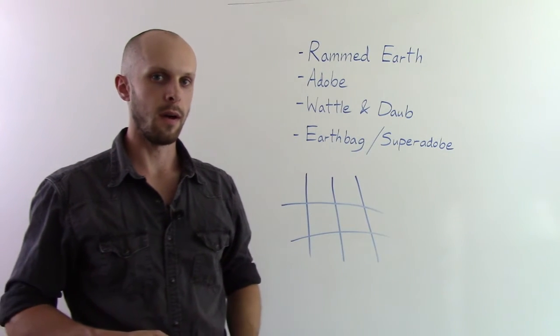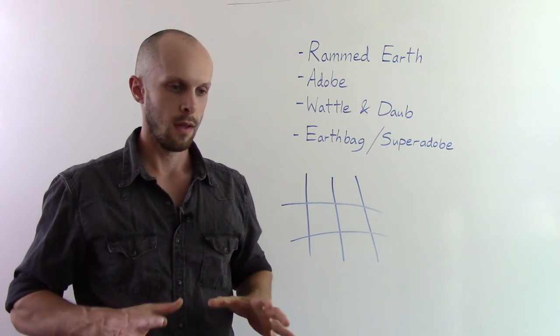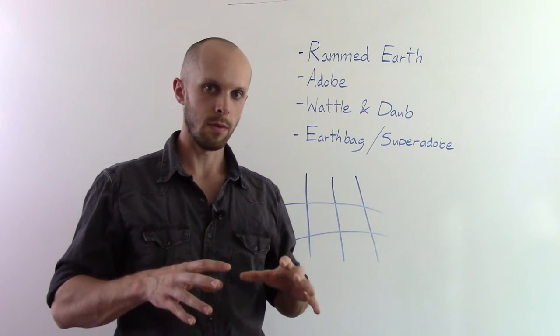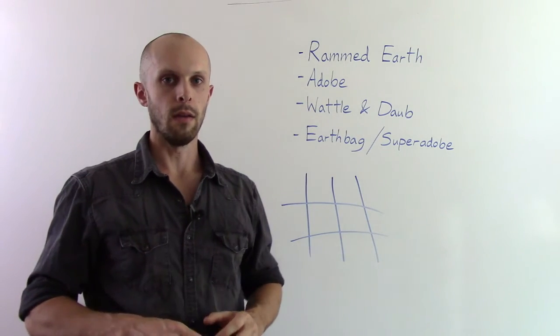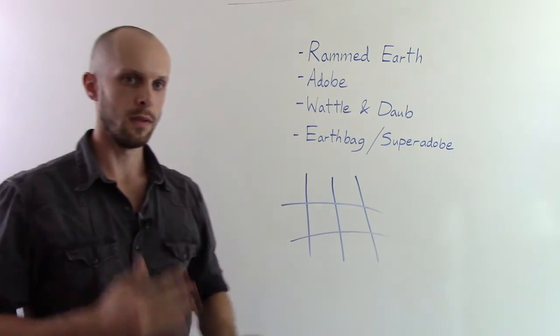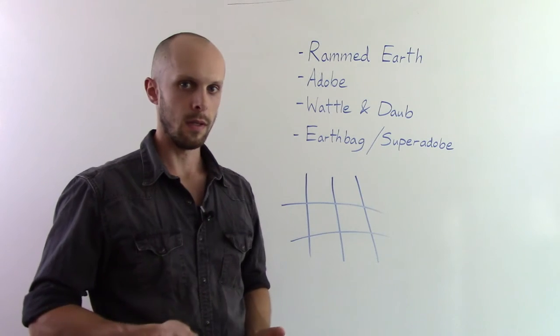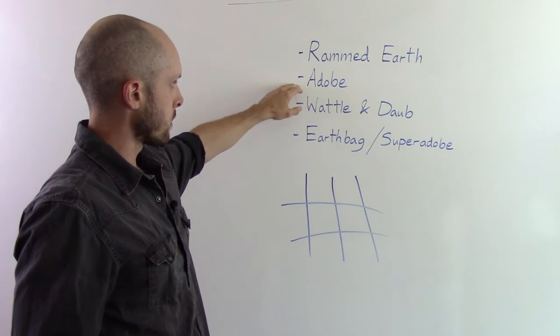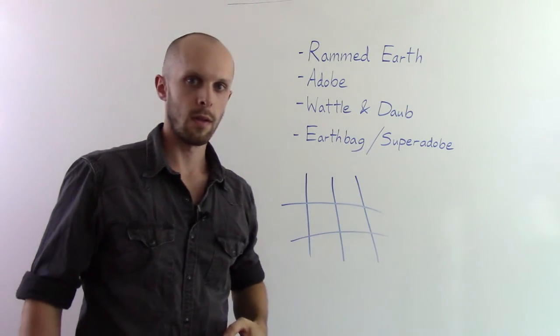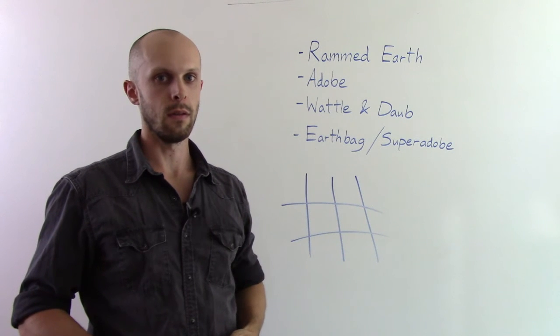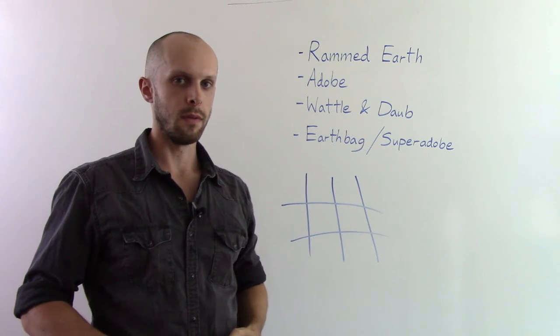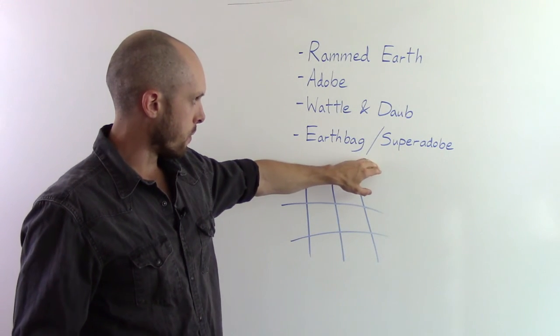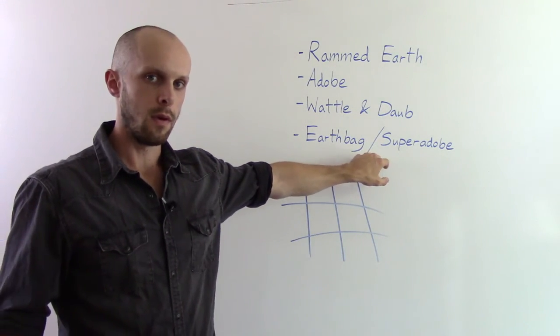And what is really nice about the Super Adobe is that it makes it easier to form domes. So you can do domes with Super Adobe Earth Bag technique and you can also do vaults. So vaulted ceilings, dome ceilings, which you can do a lot of creative things with. Now you can do that with the Adobe bricks, but it's just a little more of an art, a little more technical, not quite as easy for the do it yourself builder. So that's why I do recommend the Earth Bag Super Adobe if you want to do vaults or domes.